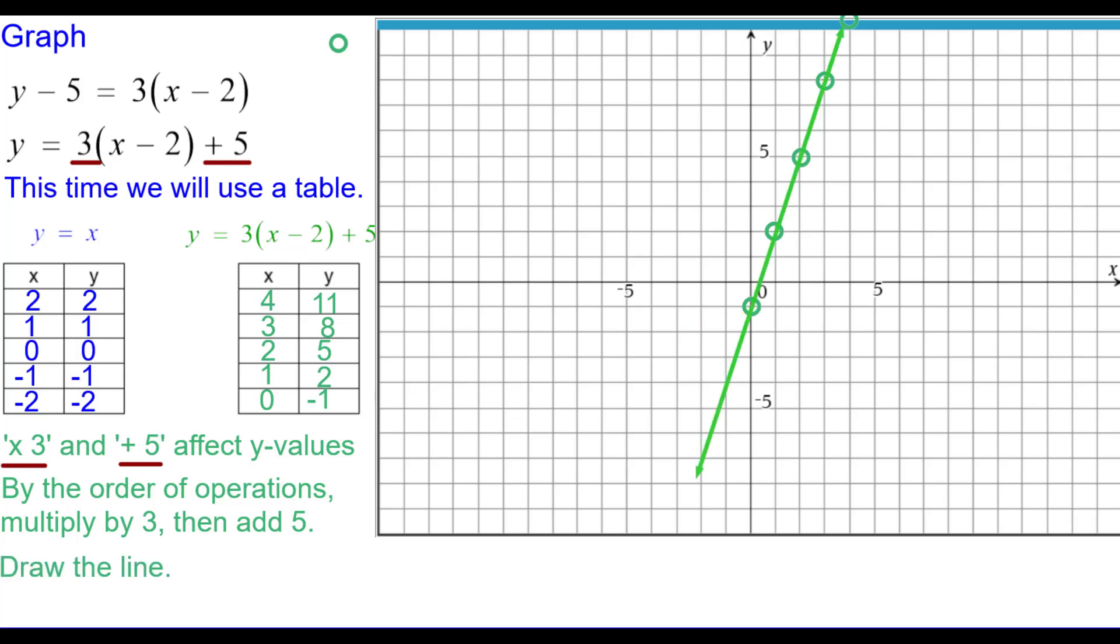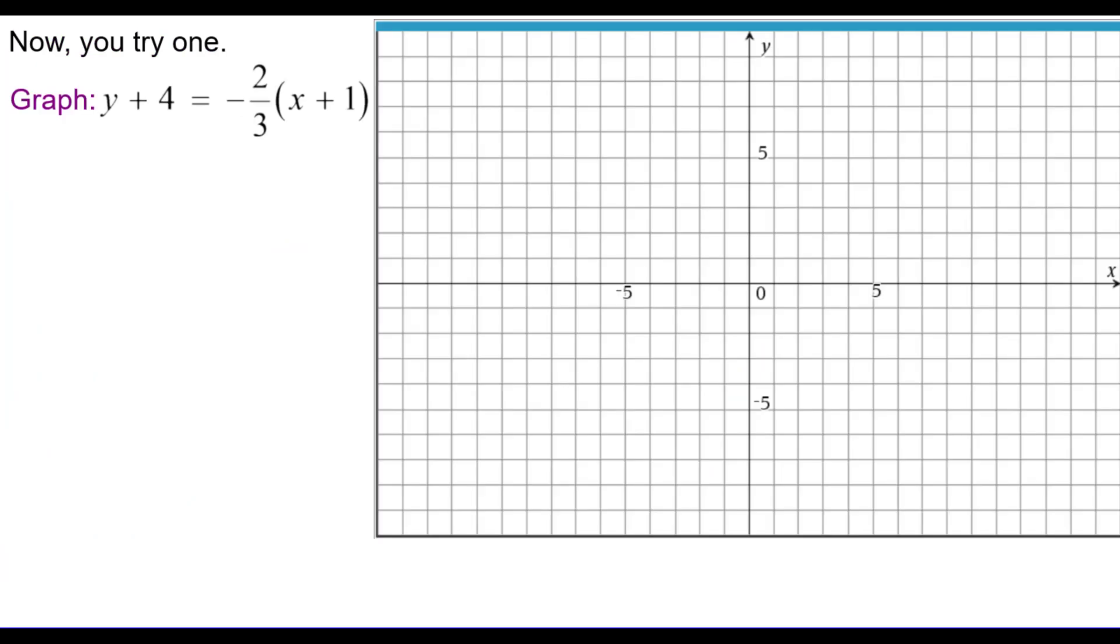Draw the line. And again, this is the graph of either one of those two equations. Now you try one. Graph y plus 4 equals negative 2 thirds times the quantity of x plus 1. Pause as needed and resume to check your answer. And remember, we're only going to show the answer.